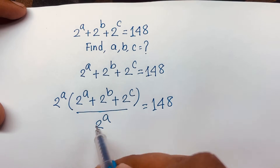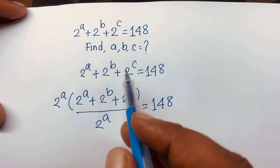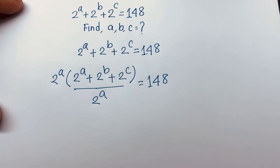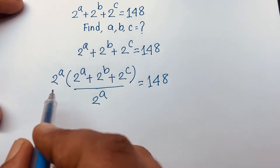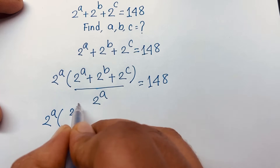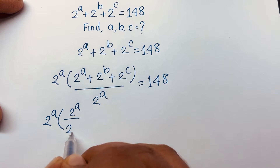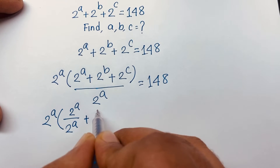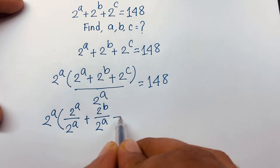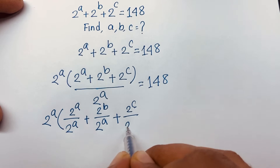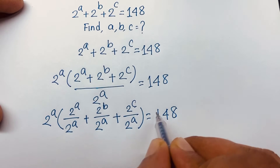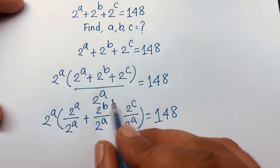Since I multiply by 2^a and again divide by 2^a, they cancel out. I separate the terms: (2^a · 2^a)/2^a + (2^b)/2^a + (2^c)/2^a = 148.